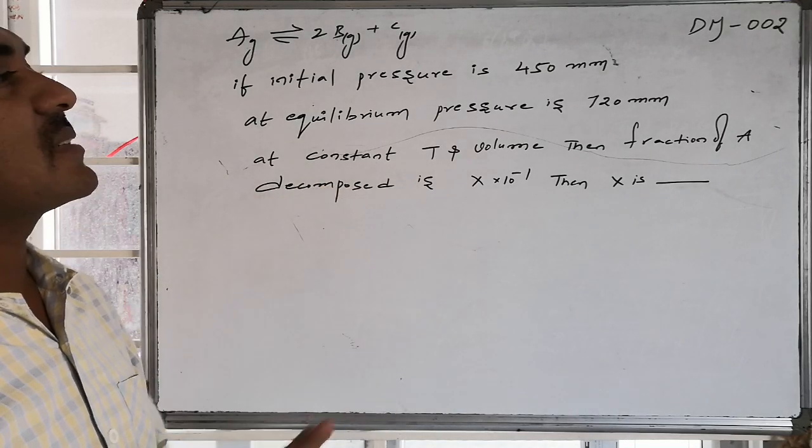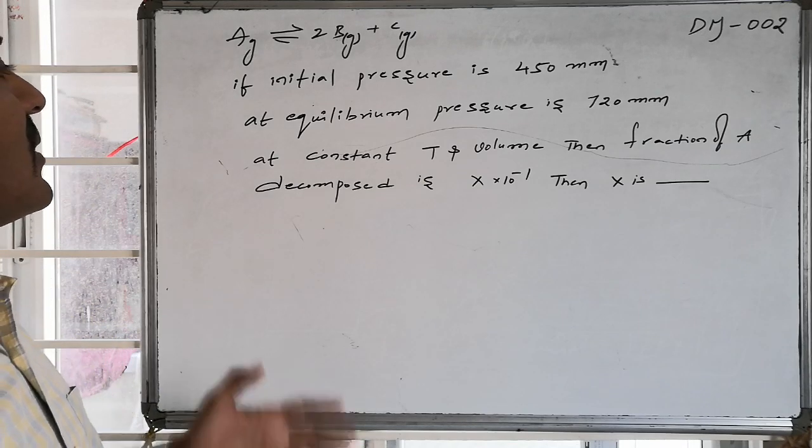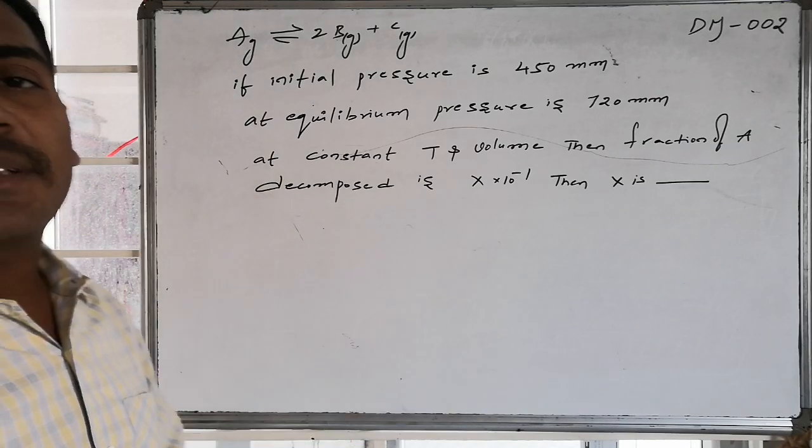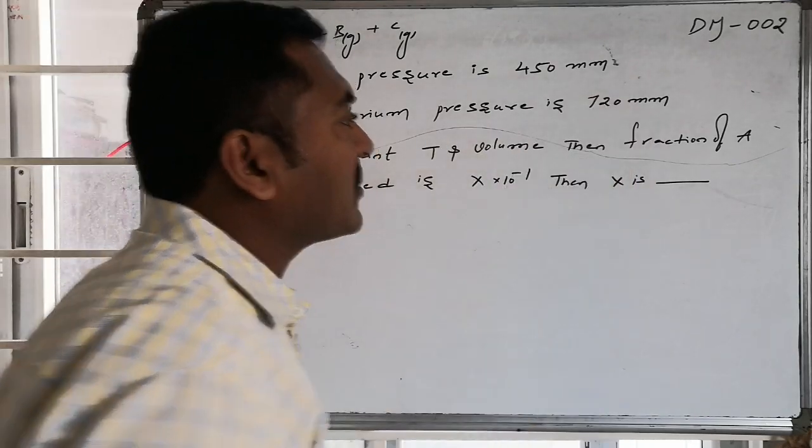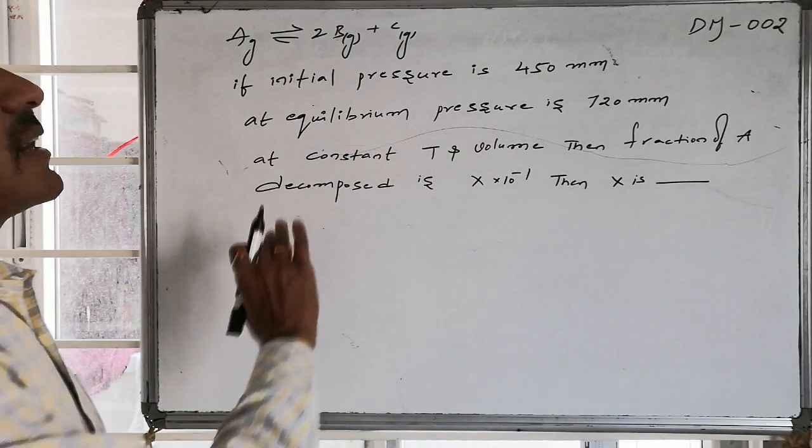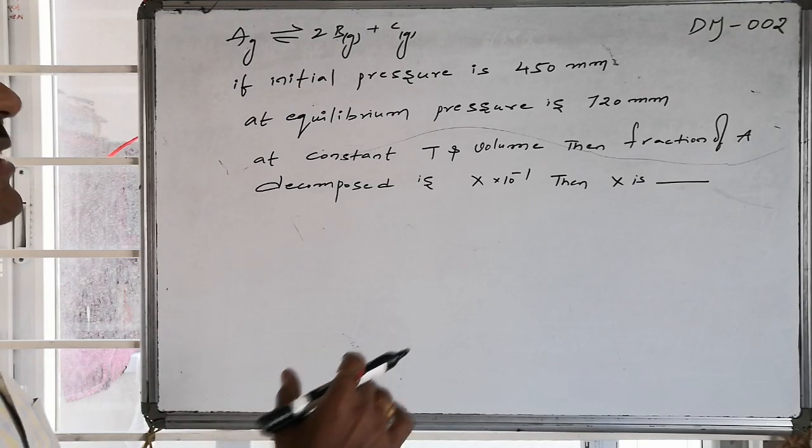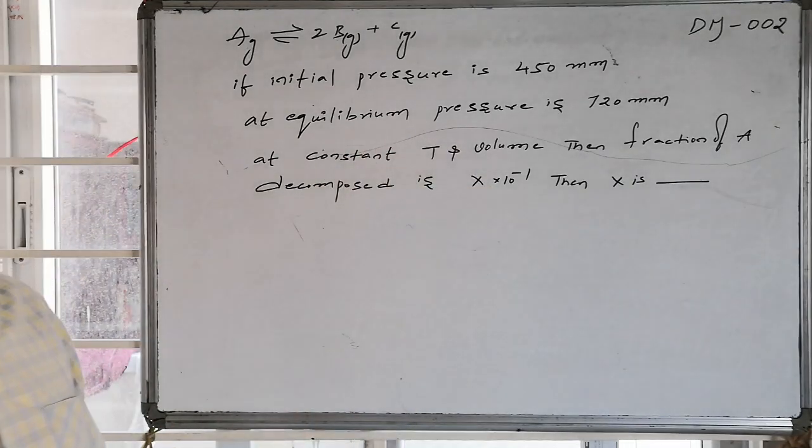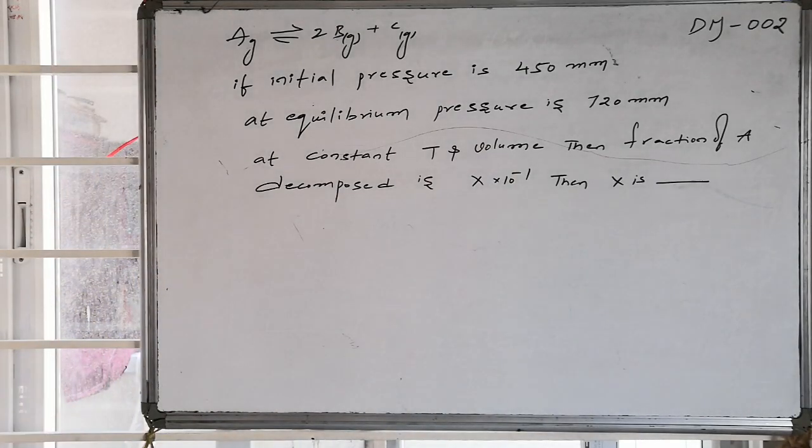If the initial pressure of this A gas is 450 mm Hg, at equilibrium the pressure is reached to some other value, that value is found to be 720 mm Hg. By keeping constant temperature as well as volume of the container, then the fraction of A decomposed is found to be some x times 10 power minus 1. Then what is the value of x?